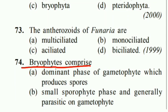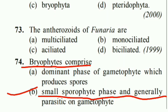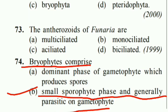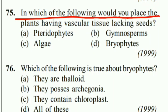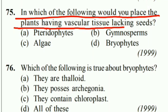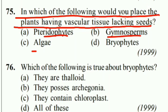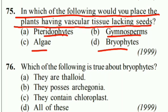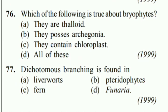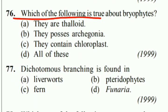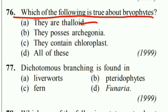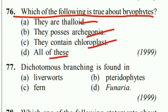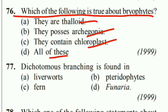Bryophytes comprise a small sporophyte phase that is generally parasitic on the gametophyte. Plants having vascular tissue but lacking seeds are placed in Pteridophytes. Bryophytes are thaloid, possess archegonia, and contain chloroplasts — all of these statements are true.